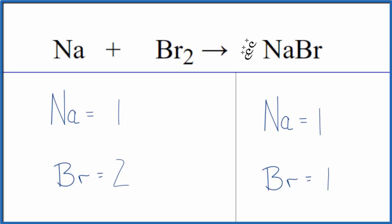To balance these, why don't we put a coefficient of 2 in front of the NaBr. One times the two, that'll give us two bromine atoms. They're balanced.